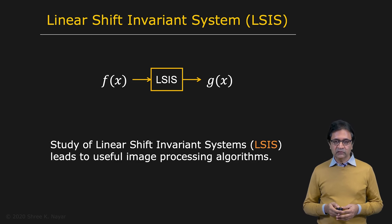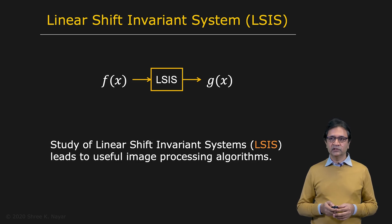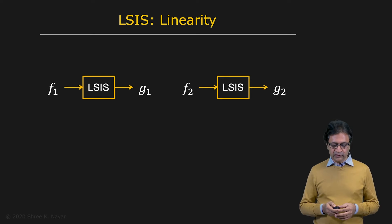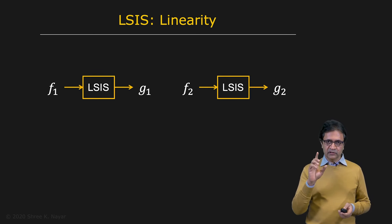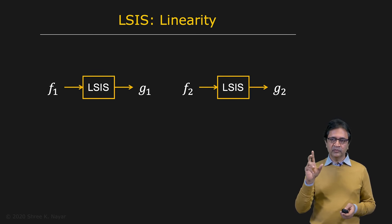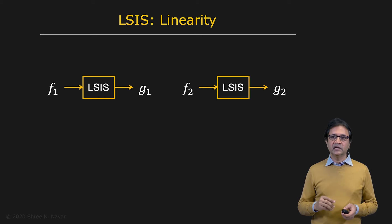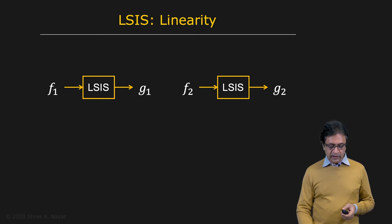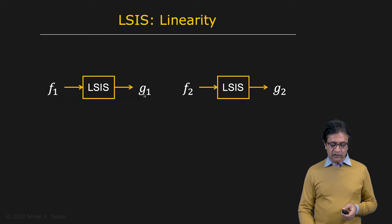So let's take a look at what a linear shift invariant system is. As the name implies, the first property that the system has is that it's linear. Imagine you have the system here, and you feed it an input f1, and you get an output g1.